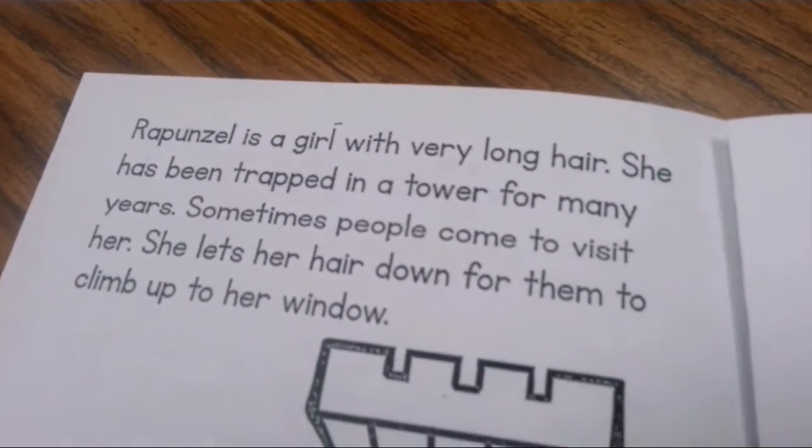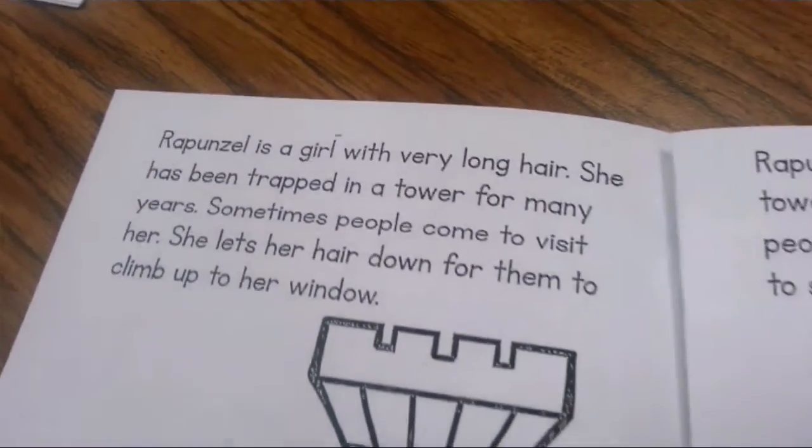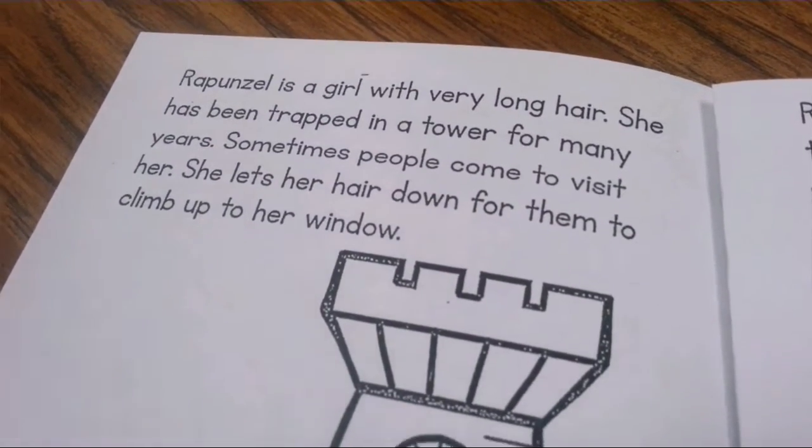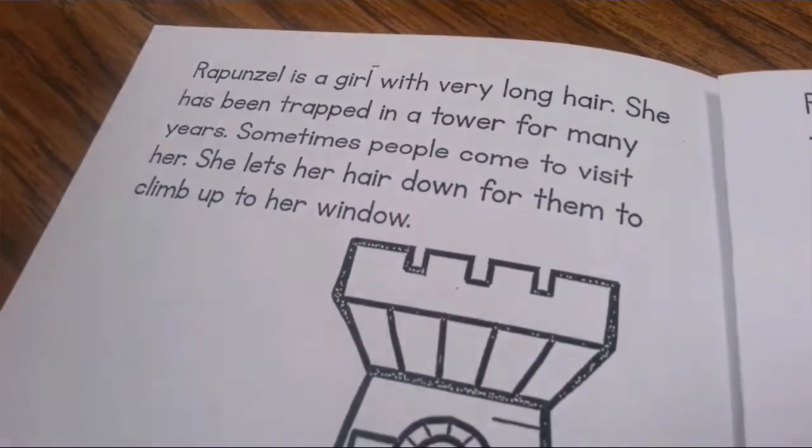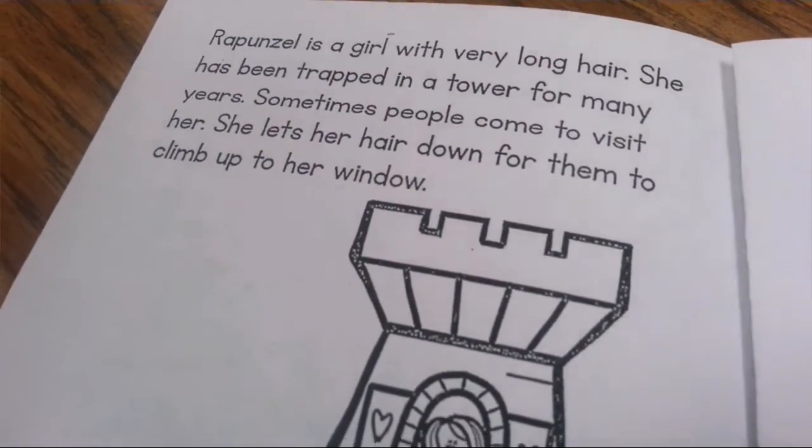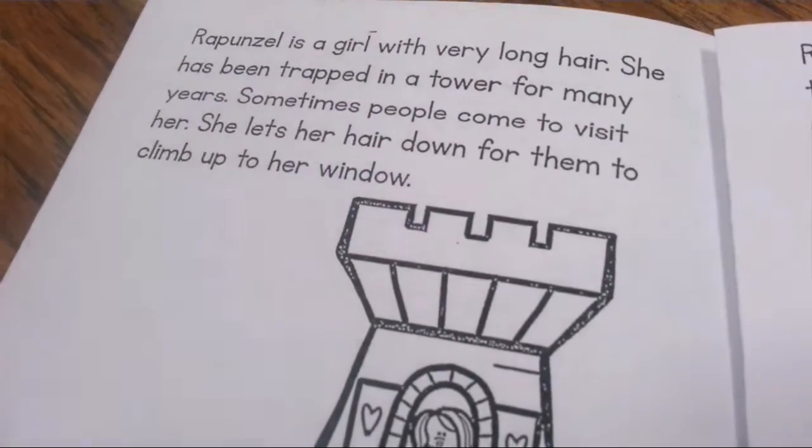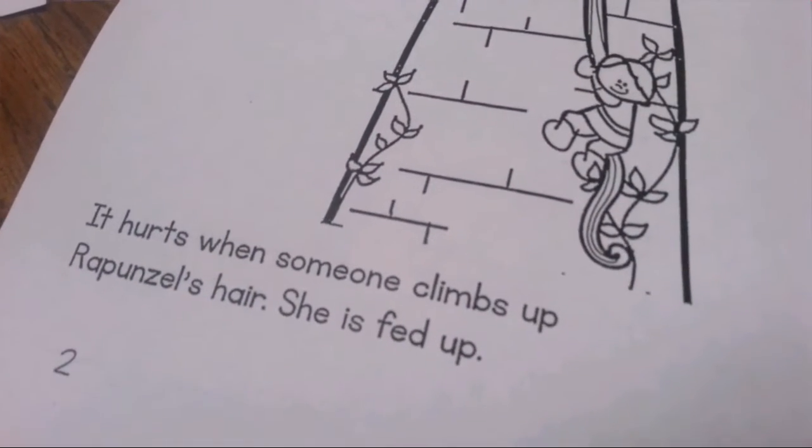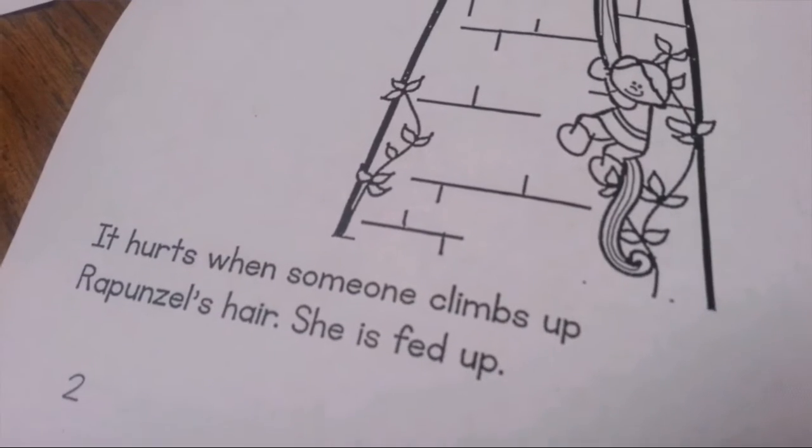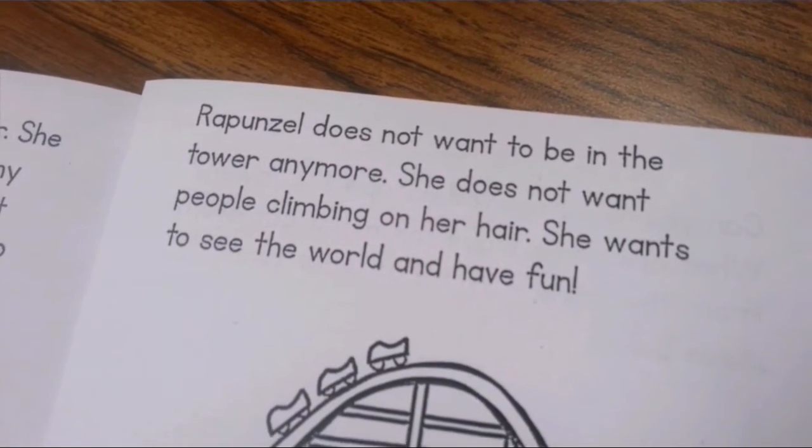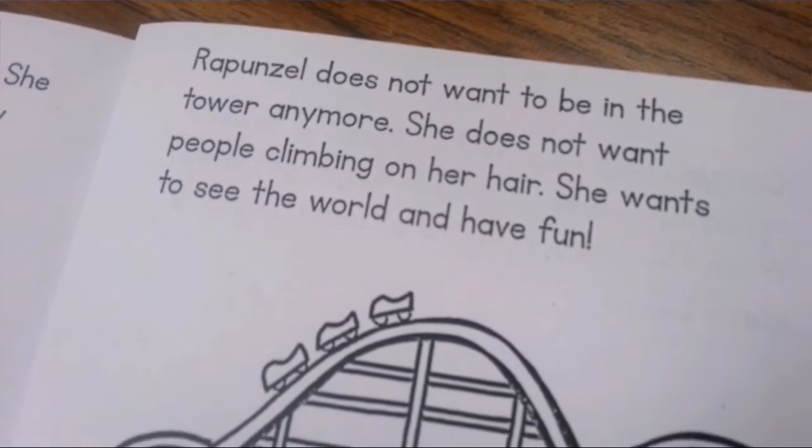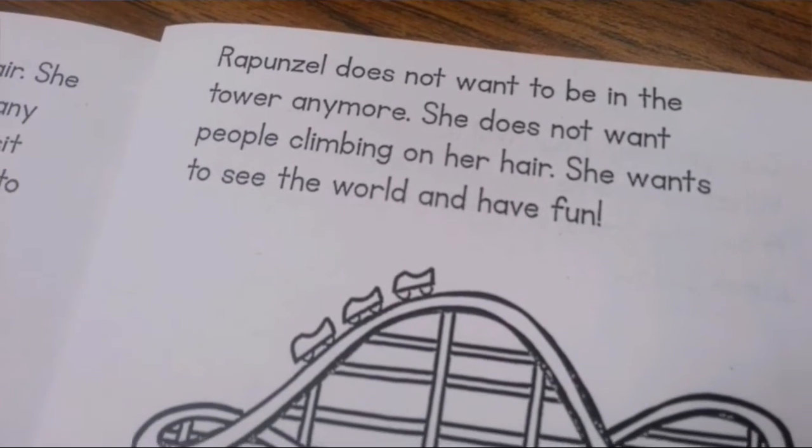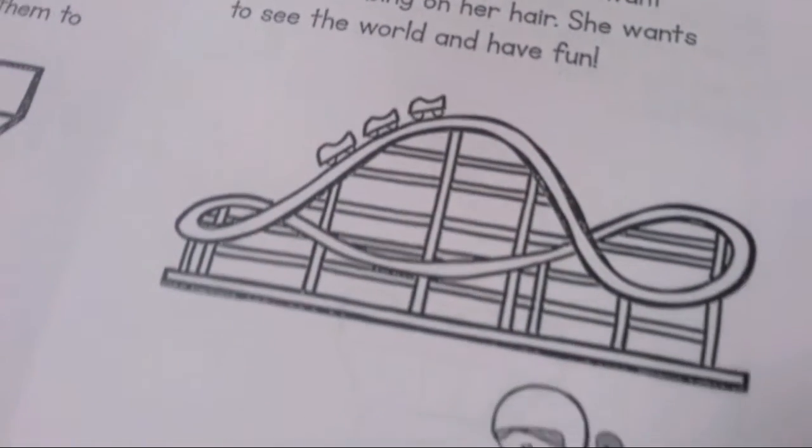Rapunzel is a girl with very long hair. She has been trapped in a tower for many years. Sometimes people come to visit her. She lets her hair down for them to climb up to her window. It hurts when someone climbs up Rapunzel's hair. She is fed up. Rapunzel does not want to be in the tower anymore. She does not want people climbing on her hair. She wants to see the world and have fun.